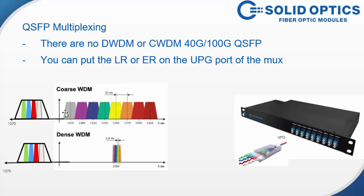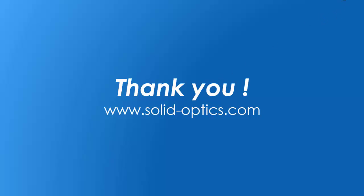For CWDM, you have all your colors on the MUX and your QSFP color on the uplink port. For DWDM it's the same, only your standard channels are around 1550 and your QSFP channels are around 1310 — and that's how you can multiplex them. That's the only possibility right now. Thank you very much.